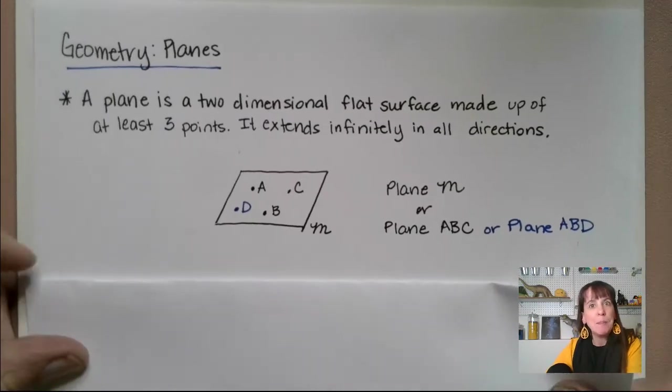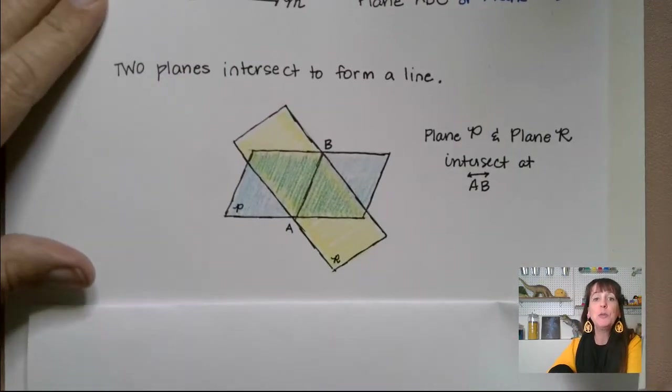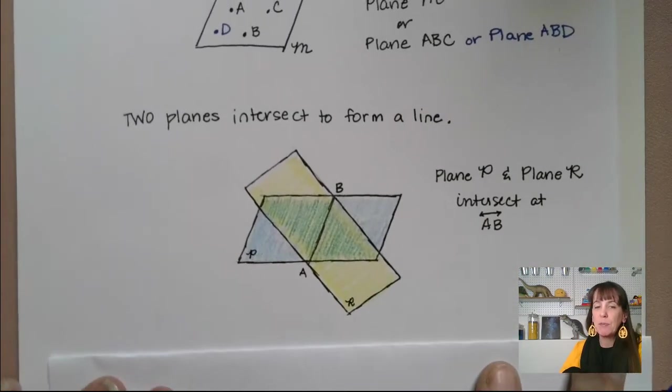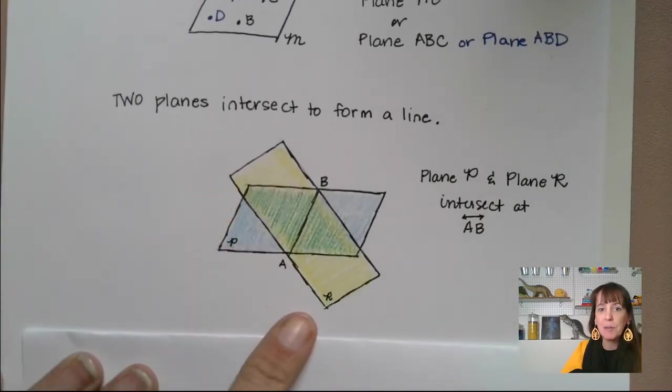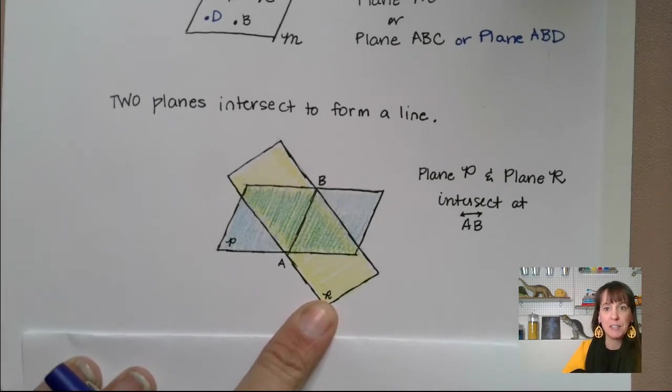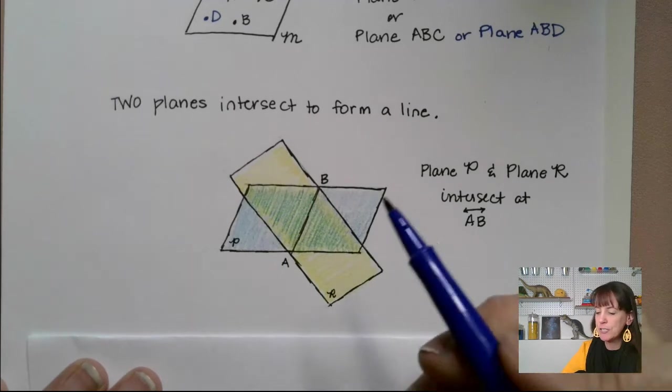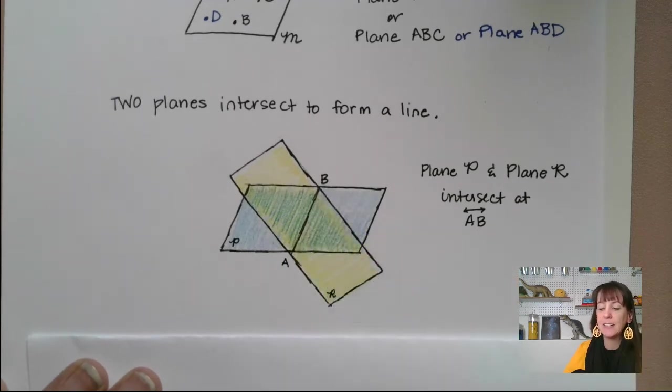Okay, so let's talk about what happens when two planes collide. When two planes intersect, they form a line. And you can see that if we have a plane R, because the scripted letter here, and plane P, they're crossing and they intersect right here at line AB.